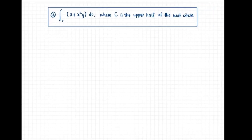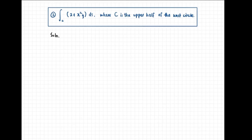Here, let's evaluate the line integral of 2 plus x squared y along c with respect to the arc length parameter s, where c is the upper half of the unit circle. We are given the function to integrate and the smooth curve c, but we need a parametrization for c. Note that line integrals do not depend on the parametrization.